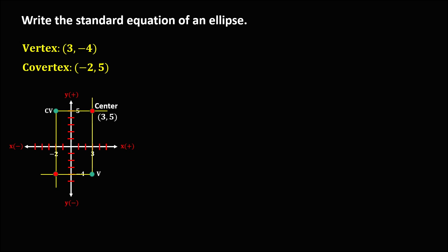Since the vertex is in a vertical position, this ellipse is a vertical ellipse. The formula for a vertical ellipse is: (x − h)² / b² + (y − k)² / a² = 1.